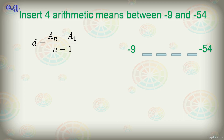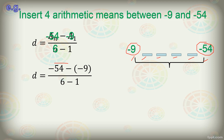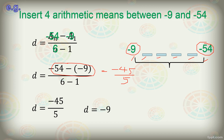Our a sub n, the last term, is negative 54. Minus a sub 1, the first term, which is negative 9. Divided by n, the number of terms. We have 1, 2, 3, 4, 5, 6 — so we have 6 terms in all, so n is 6. Rewriting: D equals negative 54 minus negative 9 divided by 6 minus 1. Negative 54 minus negative 9 gives us negative 45, and 6 minus 1 gives us 5. Therefore, D equals negative 45 divided by 5, so our common difference is negative 9.